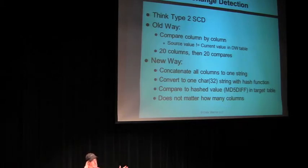So we'll just keep it simple. Think about a type 2 dimension. So if you've got 10, 20, 30, 100 columns, however many there are, you've got to look at each one of those and compare them. A equals A, B equals B. Oh, there's one that's different. Now I write the row.